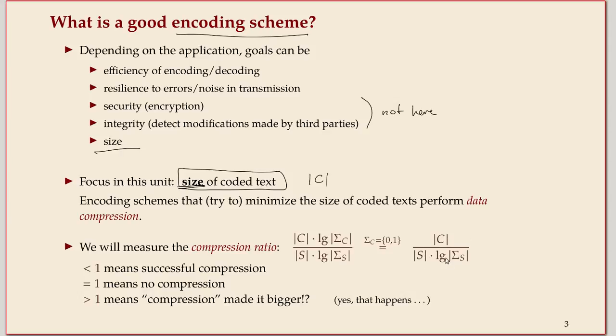This compression ratio can be one, meaning the two are essentially the same size. It can be less than one, then we've compressed the source text. It can occasionally be bigger than one. In that sense, the compression was really an inflation, completely unsuccessful. But as you'll see, this sometimes happens.